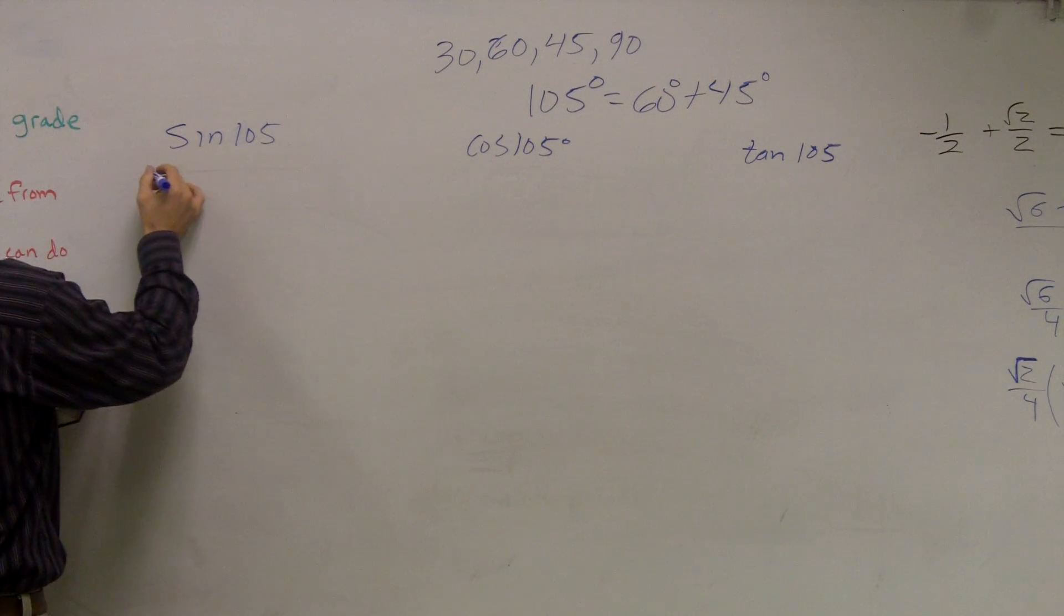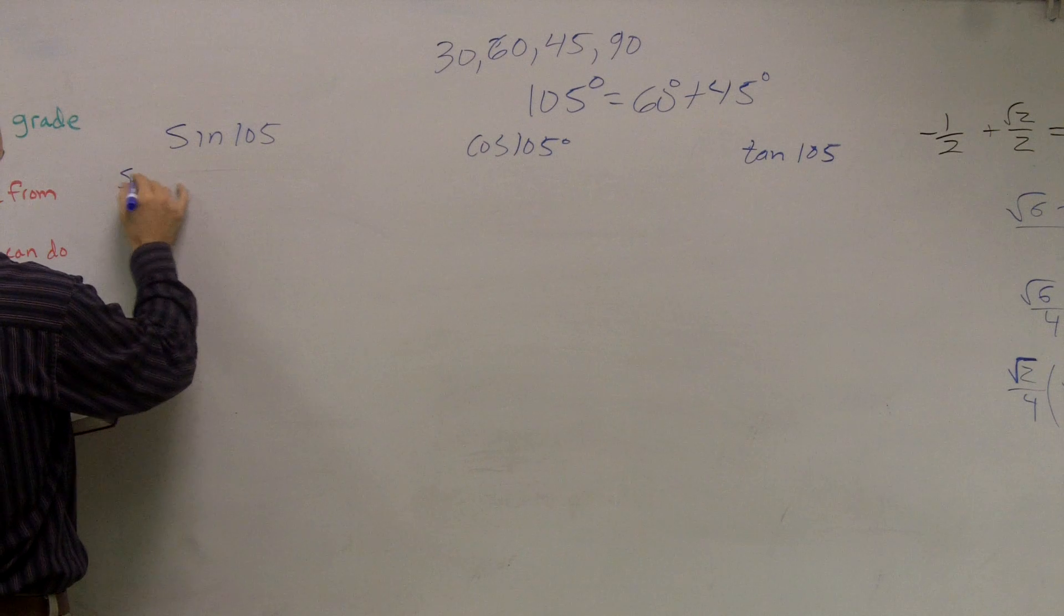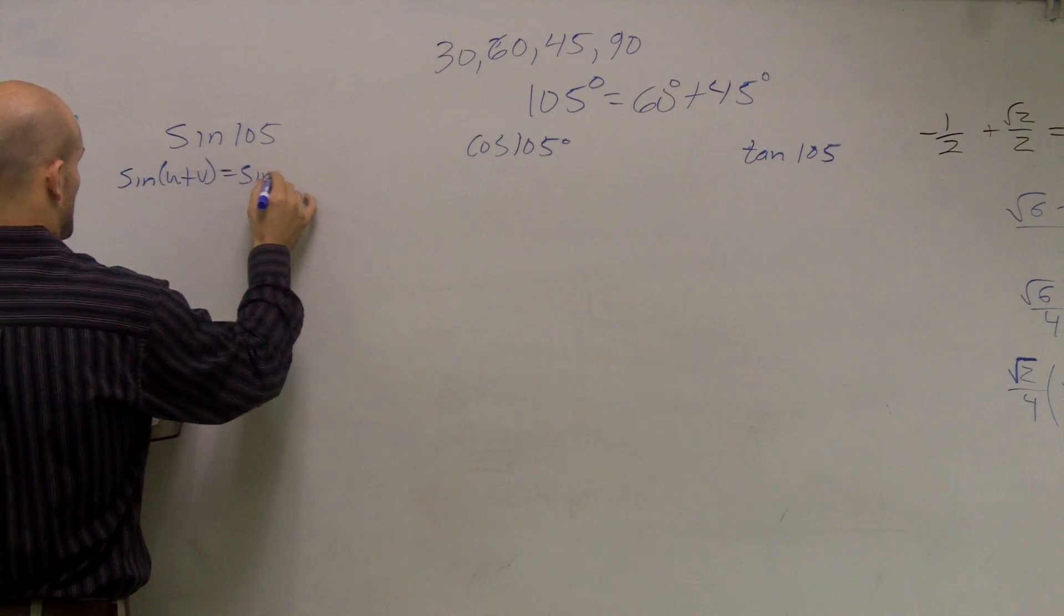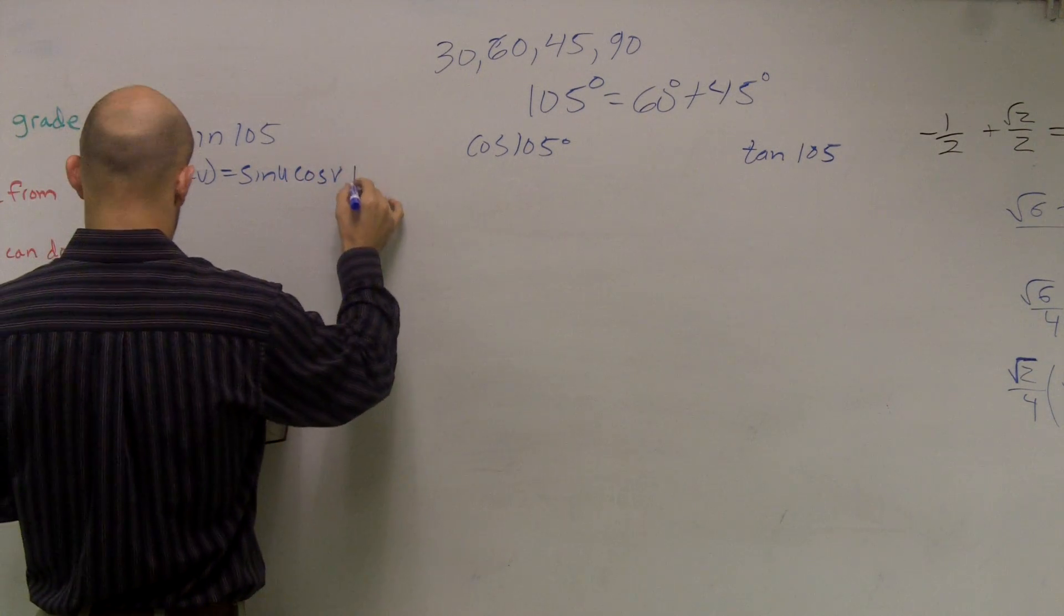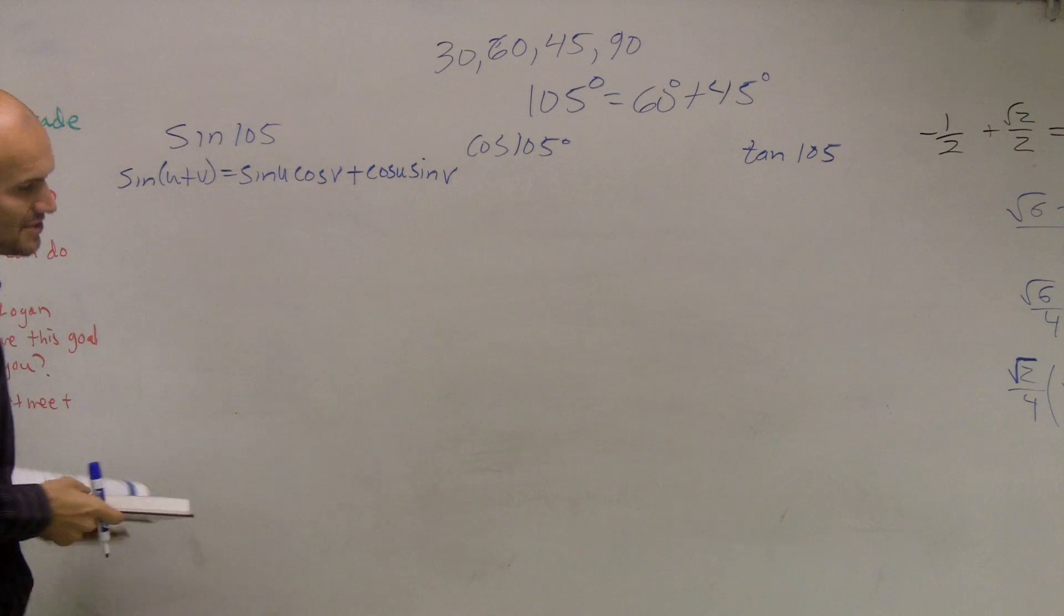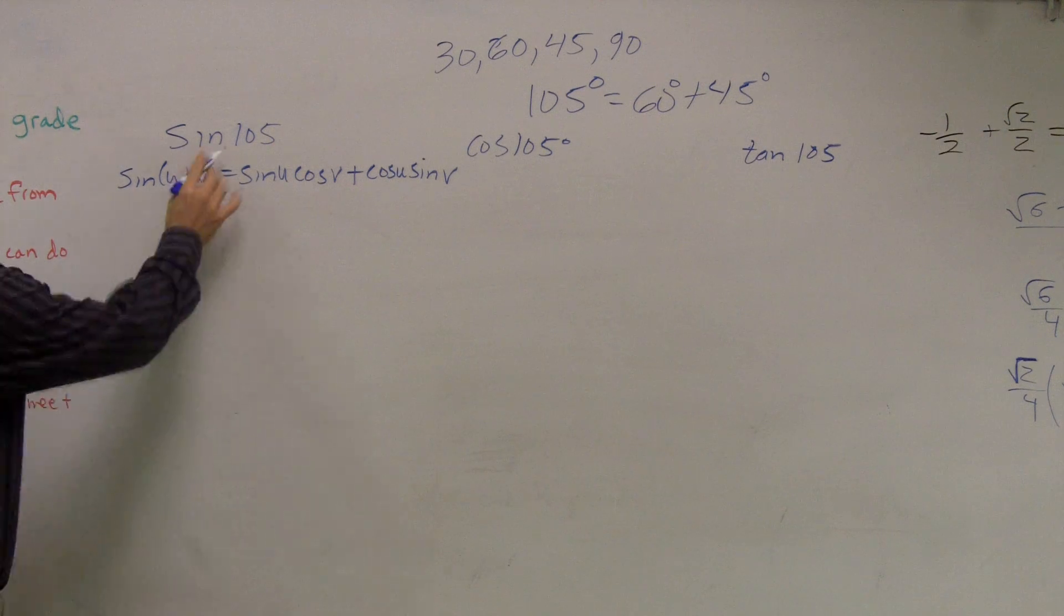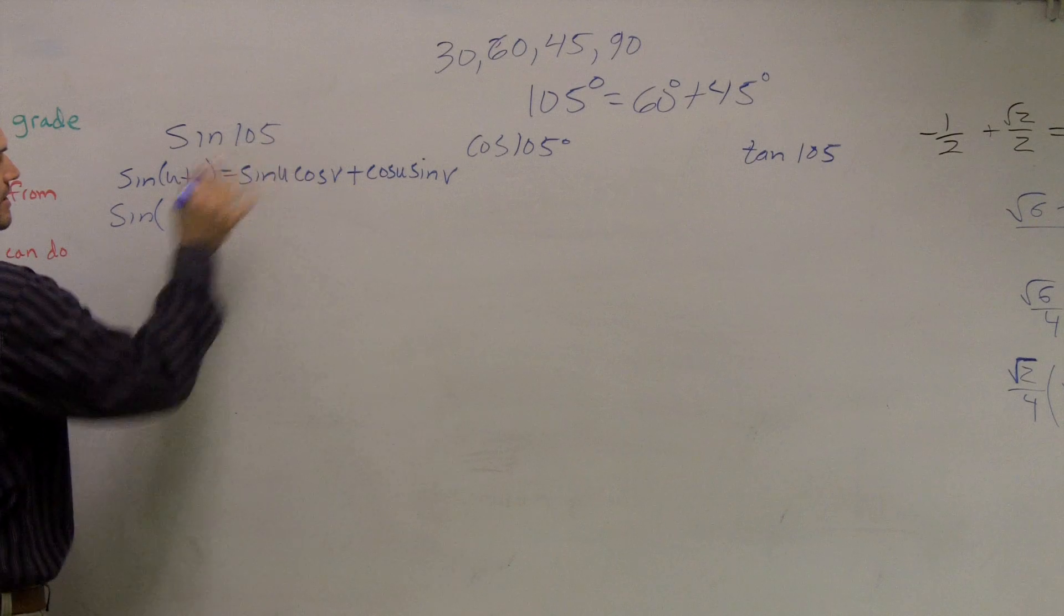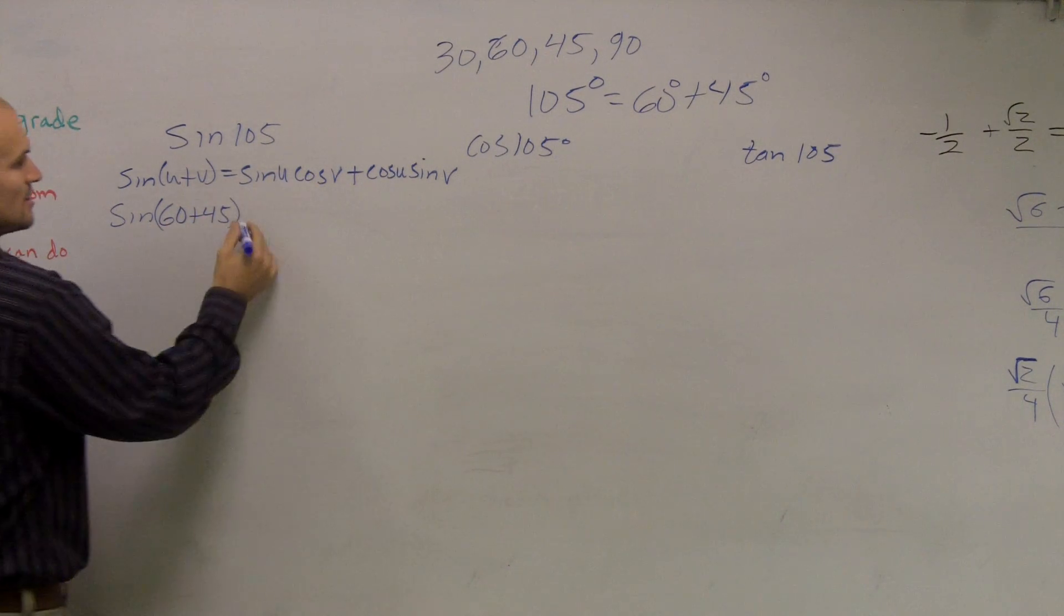So I can write now the sine of 105 can be rewritten, or at least the sum and difference. And let's do sine first before I kind of get too much rim out here. So now, instead of this, I'm going to use the sine of 105 degrees, which can be rewritten as 60 plus 45 degrees.